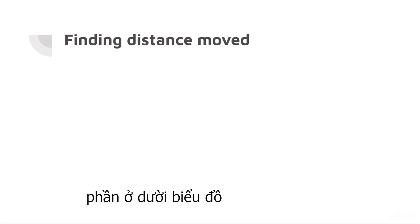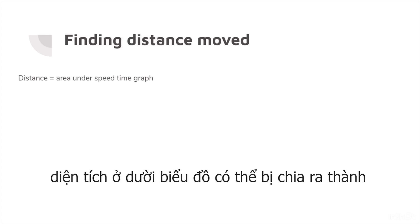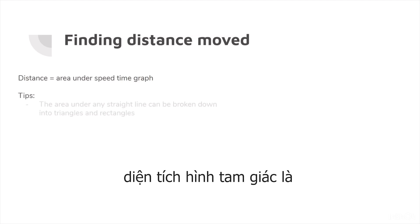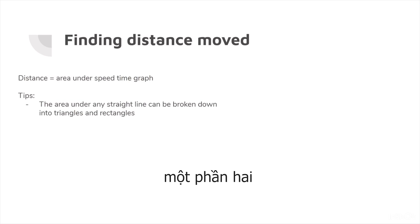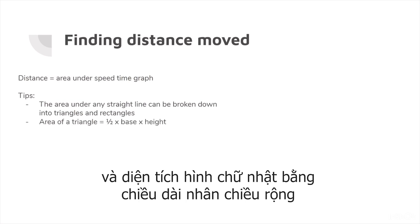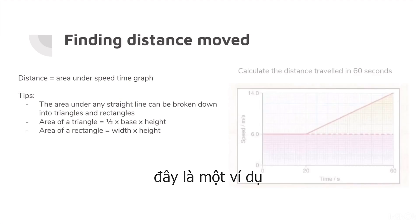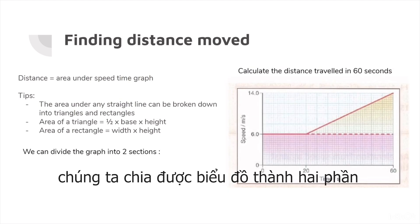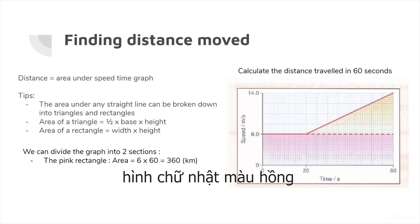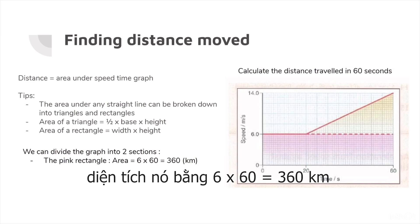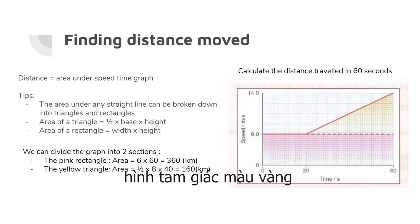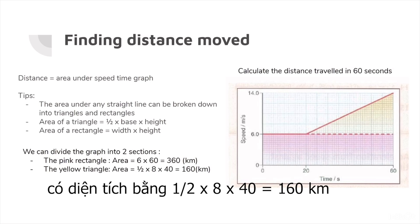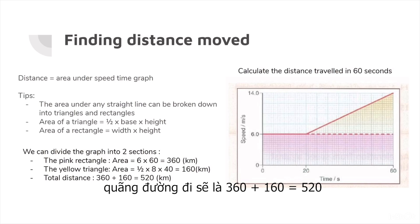The distance traveled can be found from the area under a speed-time graph. The area under any straight line can be broken into triangles and rectangles: area of a triangle is one-half base times height, and area of a rectangle is width times height. For example, to calculate the distance traveled in 60 seconds: the pink rectangle area is 6 × 60 = 360 km, the yellow triangle area is ½ × 8 × 40 = 160 km, giving a total distance of 360 + 160 = 520 km.